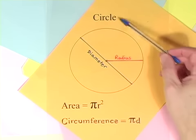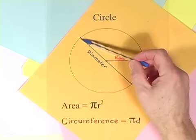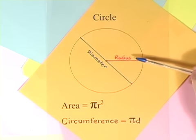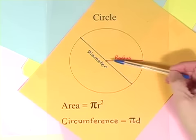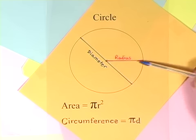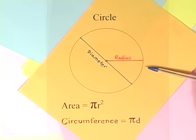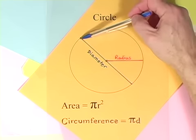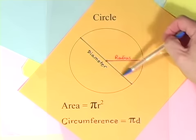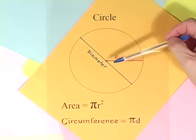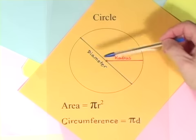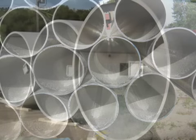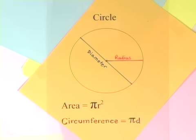Here is a circle. It knows how to get around. It has a radius from center to rim. And its diameter's a line that goes from side to side while passing through the center. Now isn't that simple?